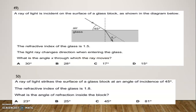Question Number 49: A ray of light is incident on the surface of a glass block. The refractive index of the glass is 1.5. The light ray changes direction when entering the glass. What is the angle X through which the ray moves? Options: 30°, 28°, 17°, or 15°. The correct option is 17°. We can find this using Snell's law: N = sin I / sin R.